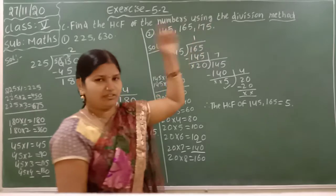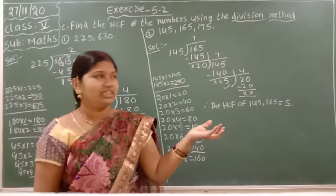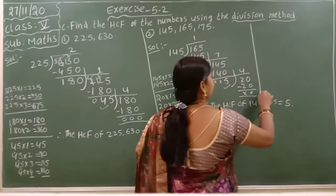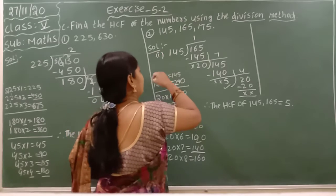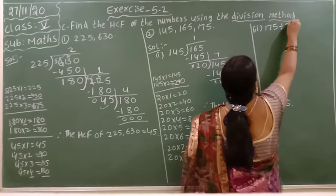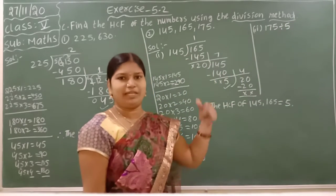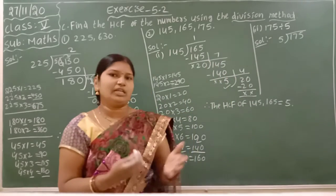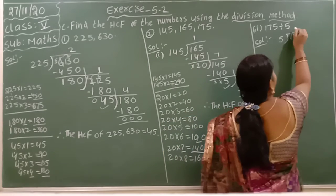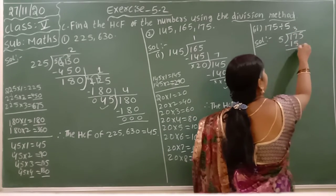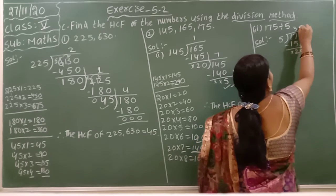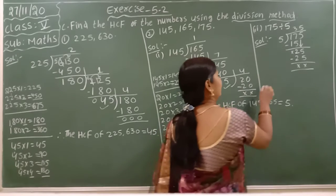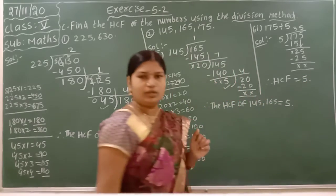Now we have one more number, that is 175. For that 175, you have to do division with the HCF answer. This is the first step, and here is the second step. Second part: the remaining number 175, you can do division with our HCF 5. Solution: here, for this third number, you have to do normal division. 5 times 3 is 15, minus: 7 minus 5 is 2, 1 minus 1 is 0. 5 goes into 25 five times, which is 45. Therefore, HCF is equal to 5.